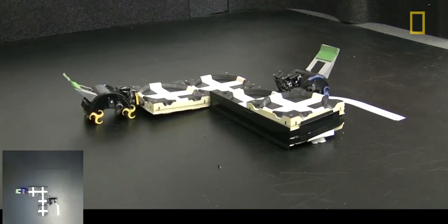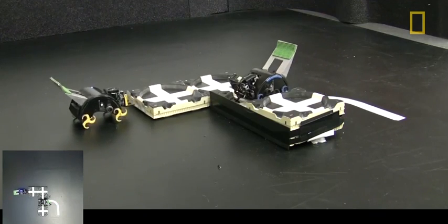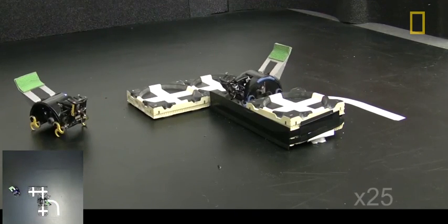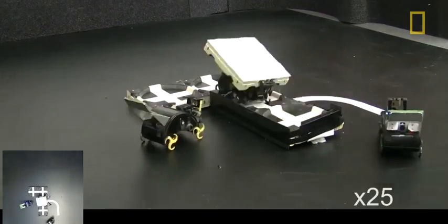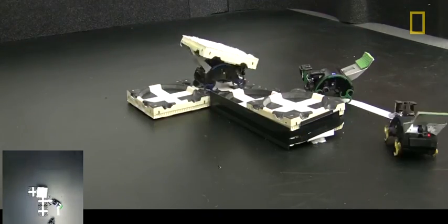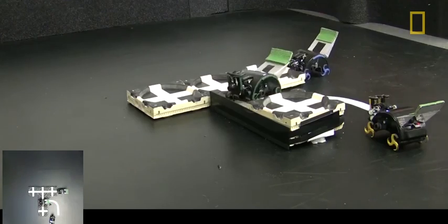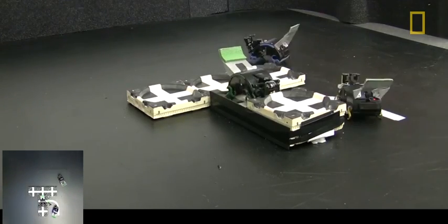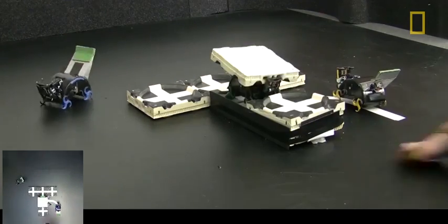Classically, the times when you want to use robots instead of people are situations described by the three Ds: dirty, dangerous, and dull. And something like building with sandbags in a flood zone is all of those things. Right now we send in the National Guard. So if we could have robots do that for us, that could help us keep people out of harm's way.